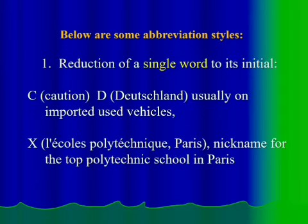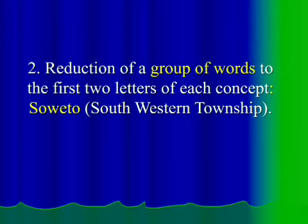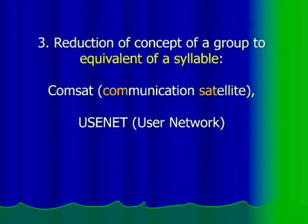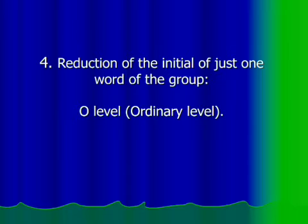Here we can see the classification of abbreviations. The first type: a single initial word is used, such as COD, or C for a school in Paris. Next: reduction of a group of words to the first two letters of each concept — for example, South Western Township. Another type: reduction of a concept group to the equivalent of a syllable — for example, 'communication satellite' or 'user network.' Another type: reduction using only the initial of one word in the group — for example, O-Level, whose full name is Ordinary Level, where only the first word is shortened.